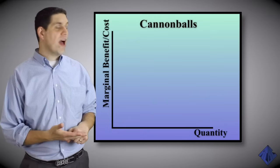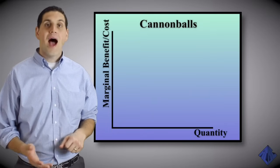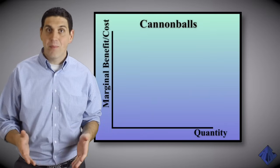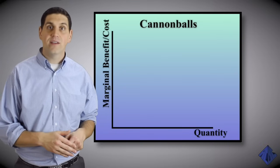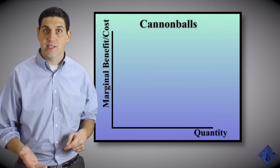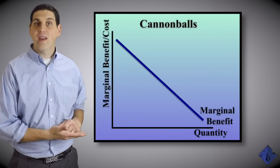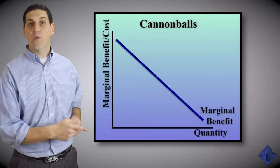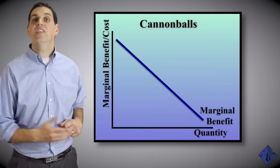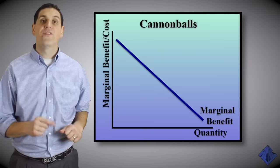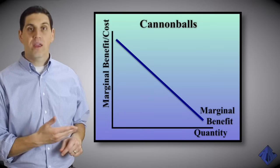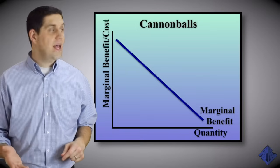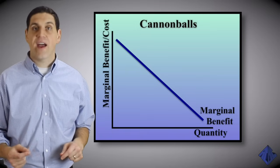Here's a graph for doing cannonballs in a party. I know it's a little silly, but it's going to help us understand the idea of marginal analysis and efficiency. The marginal benefit curve for doing cannonballs is downward sloping. This is because of the law of diminishing marginal utility. As you continue to do something, you're going to get less and less additional satisfaction from each time you do it.